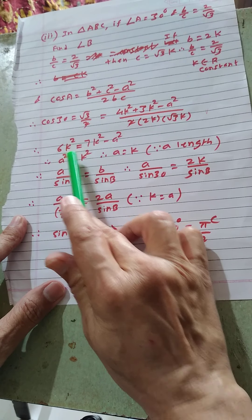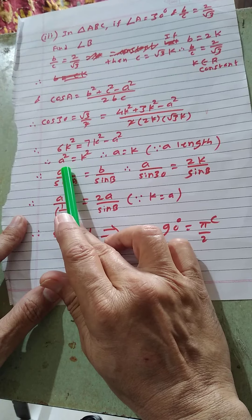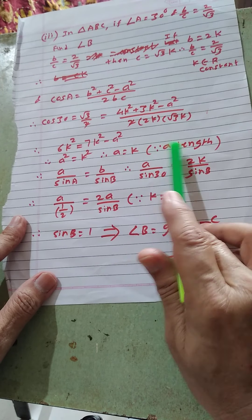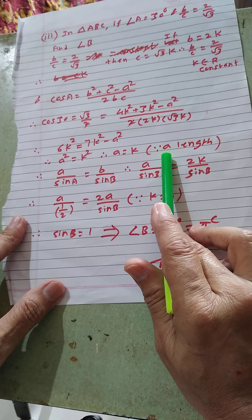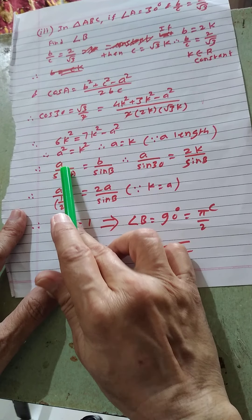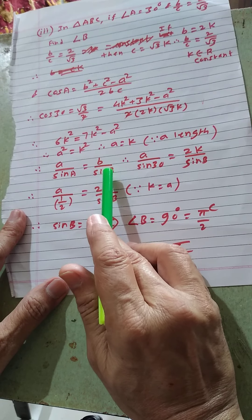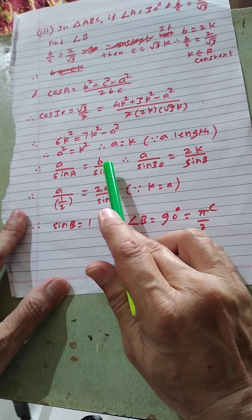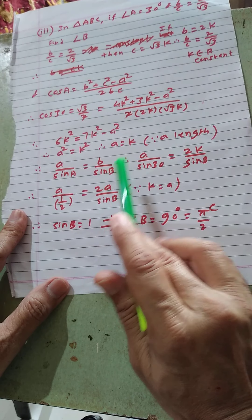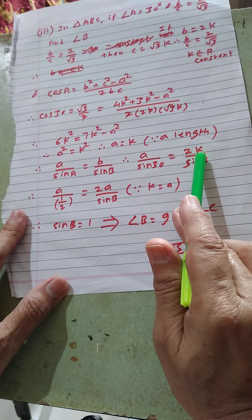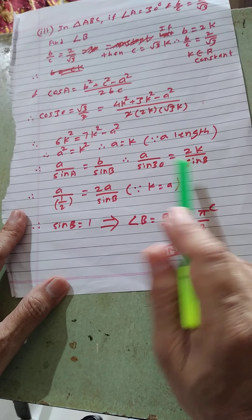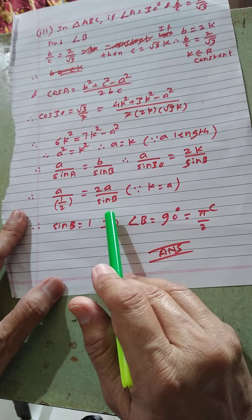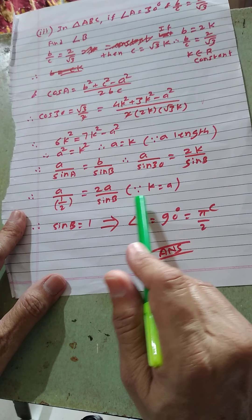Therefore a² = K², so a = K (positive, since a is a length). Using the sine rule: a/sin A = b/sin B. Substituting a = K, A = 30°, b = 2K: K/(1/2) = 2K/sin B, which simplifies to 2A/sin B = 2A, so sin B = 1.